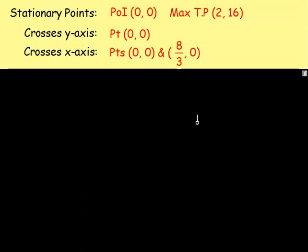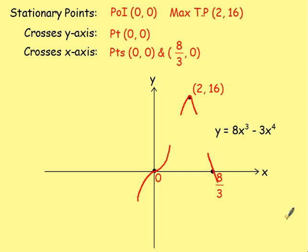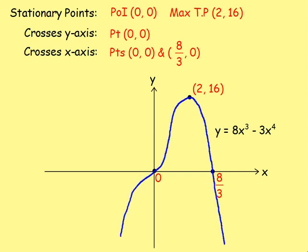With all that information, draw your x-axis and y-axis and mark on the key points: (0, 0), (2, 16), and (8/3, 0). The graph has a rising point of inflection at (0, 0) — it goes up, has a zero gradient, then goes up again. There's a maximum turning point at (2, 16), and the curve crosses the x-axis at 8 over 3. Join those points together and you get the completed sketch.